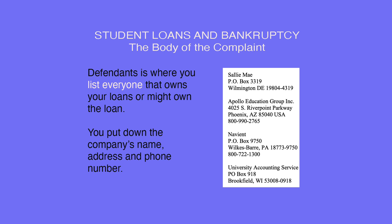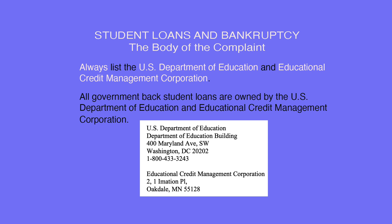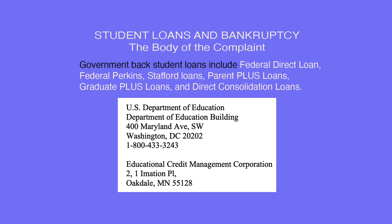Under the heading Defendants, list everyone that owns your loans or might own the loan — put down the company's name, address, and phone number. You will also list the U.S. Department of Education and Educational Credit Management Corporation. All government-backed student loans are owned by the U.S. Department of Education and Educational Credit Management Corporation. Government-backed student loans include Federal Direct Loans, Federal Perkins Student Loans, Parent Plus Loans, Graduate Plus Loans, and Direct Consolidation Loans.